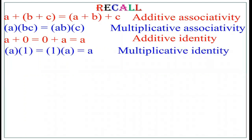What about multiplication? If you multiply any number with 1, we get the same number. That is, A into 1 equals 1 into A equals A. This property is known as multiplicative identity, where the number 1 is the identity element with respect to multiplication.